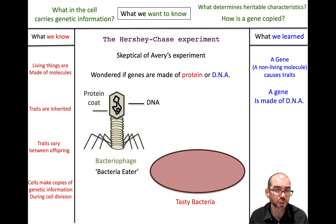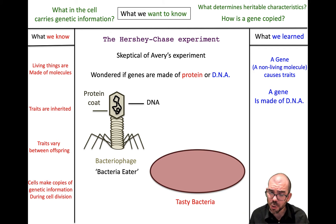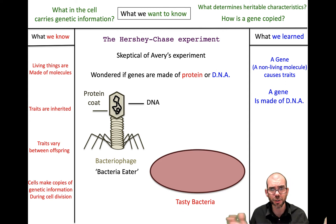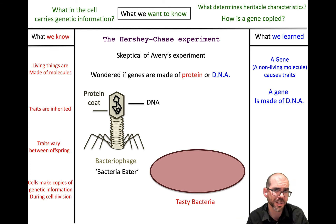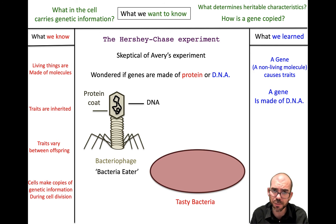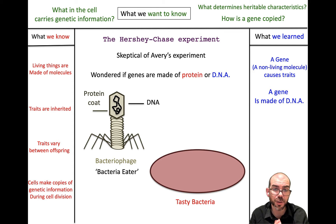This was a very controversial finding at the time. Most people believed that protein, not DNA, was the molecule of heredity — and intuitively that makes sense, because proteins are very sophisticated and three-dimensional. If any molecule were complex enough to serve as a blueprint for something as sophisticated as a human, it would probably be a protein. So along came Hershey and Chase, who were skeptical of Avery and wanted a more sophisticated experiment to conclusively prove whether it was protein or DNA causing heredity.